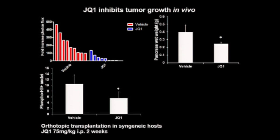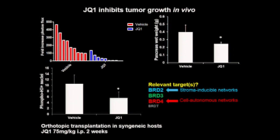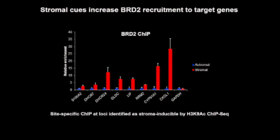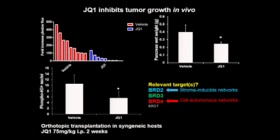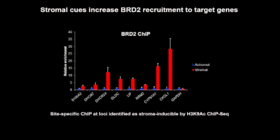The BET family has four members: BRD2, BRD3, BRD4, and BRDT. BRDT is testis-specific, but BRD2 through BRD4 are all expressed in pancreatic cancer cells. I knocked these family members down individually and looked to see which knockdown most closely phenocopied JQ1 with respect to negative regulation of stroma-inducible genes. Surprisingly, while others have shown BRD4 plays an important role in driving cell-autonomous gene regulatory networks in pancreatic cancer cells, BRD2 seemed to be the important BET family member driving stroma-inducible gene expression. ChIP also showed BRD2 was recruited to promoter or enhancer regions of stroma-inducible genes in the presence of stromal cues, presumably via increased histone acetylation.